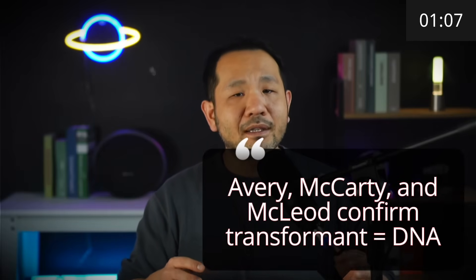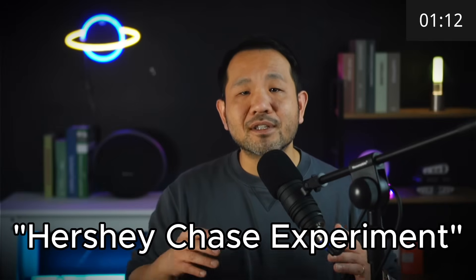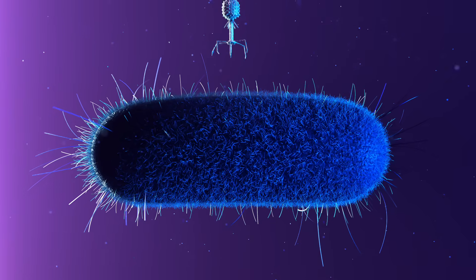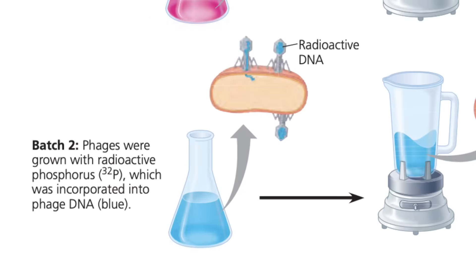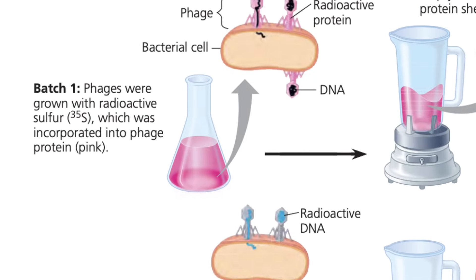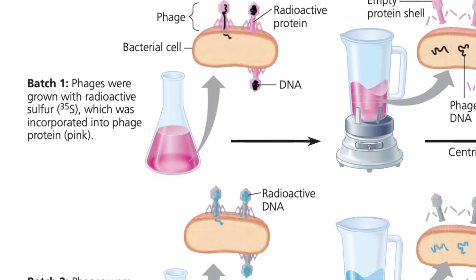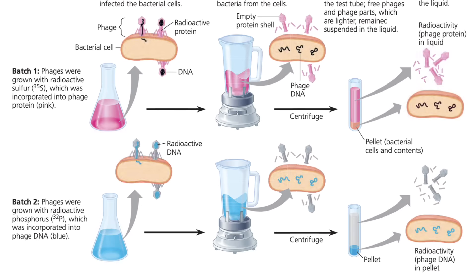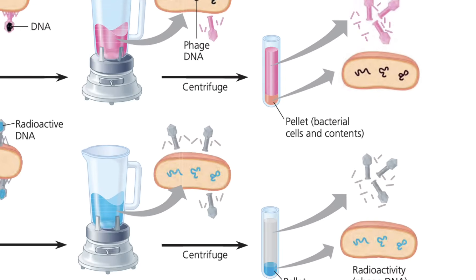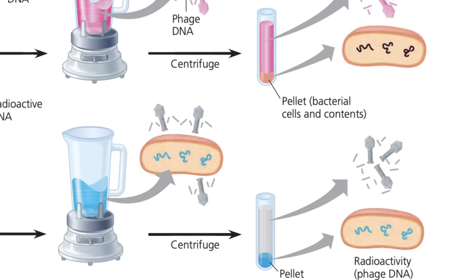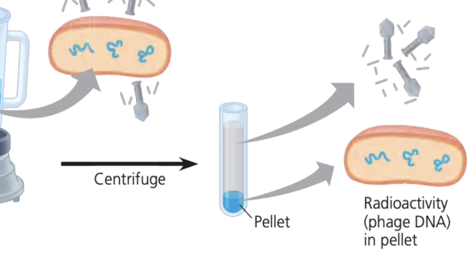This experiment was later repeated by Avery, McCarty, and McLeod to confirm that the transforming material was, in fact, DNA. Next, we have the Hershey-Chase experiment, where the scientists created two different variants of a virus that attacks bacteria. In one variant, they radioactively labeled phosphorus to detect its presence, while in another, they labeled sulfur. This was to differentiate DNA from proteins, as DNA exclusively contains phosphorus, while protein exclusively contains sulfur. Infecting bacteria with these phages showed that the transfer of genetic information was due to the presence of phosphorus in the bacterial cells, further confirming the role of DNA in carrying genetic data.